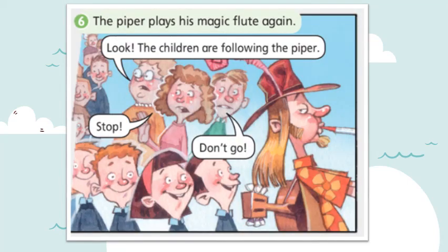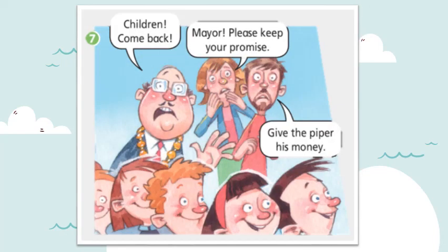The piper is angry with the mayor. I want to teach the mayor a lesson. The piper plays his magic flute again. Look! The children are following the piper. Stop! Don't go! Children, come back! Mayor, please keep your promise. Give the piper his money!